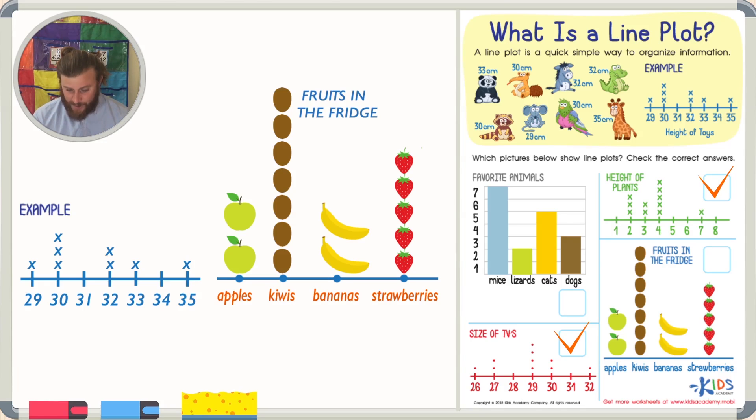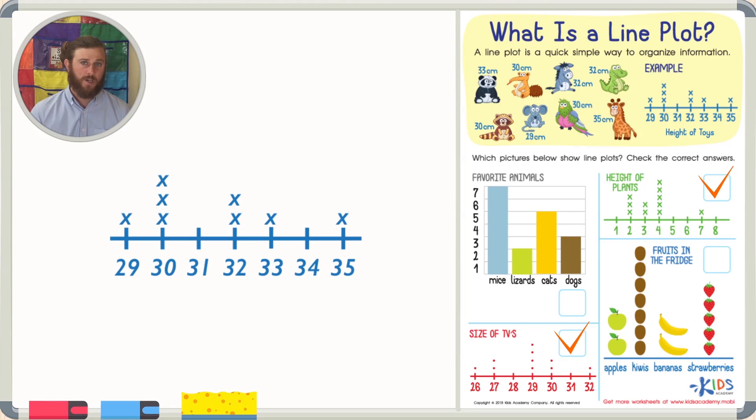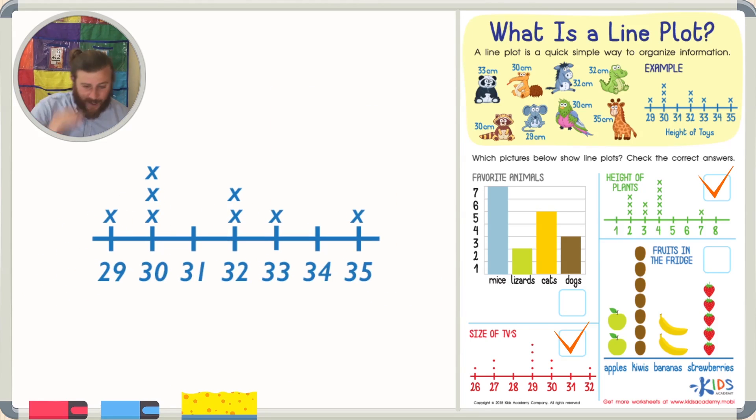So this is a classic picture graph. Remember boys and girls that when you're looking for a line plot, you can look for the numbers on the bottom. You can look for the numbers on the bottom and the X's or dots above the numbers that represent just one. Each X or dot just represents one TV or one animal.